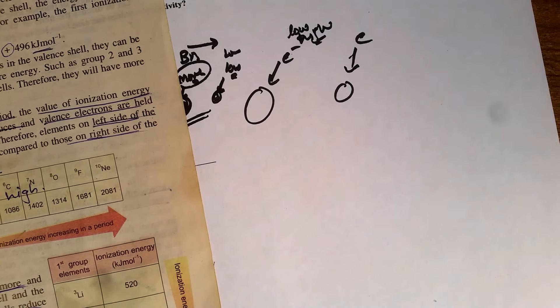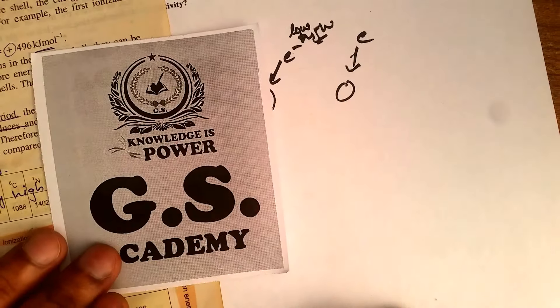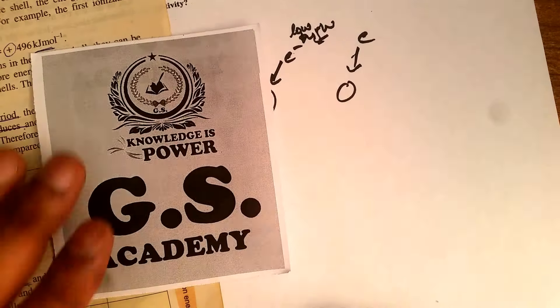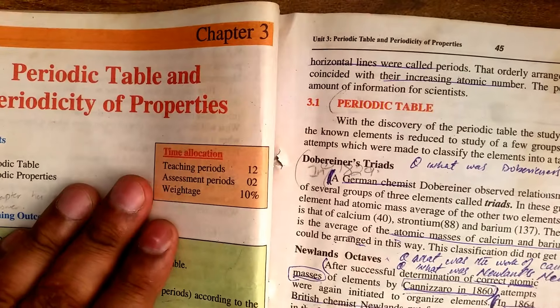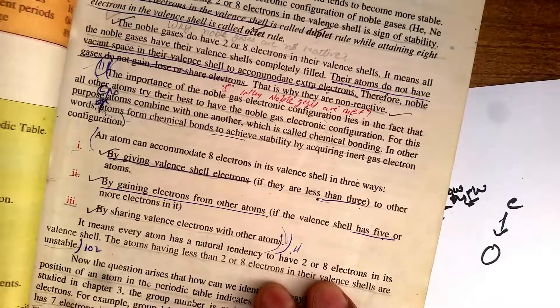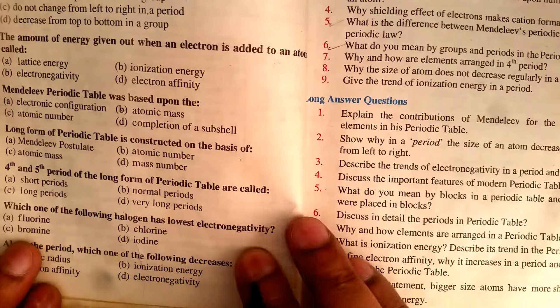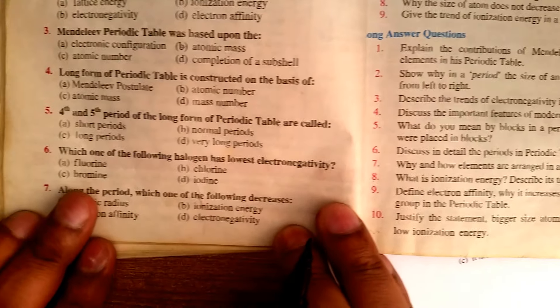Welcome to GS Academy. In today's lecture we are going to talk about Chapter 3: The Periodic Table and the Periodicity of Elements, found on page number 44. In today's topic we are going to talk about MCQs — we are carrying on with the remaining part of MCQ number 6.